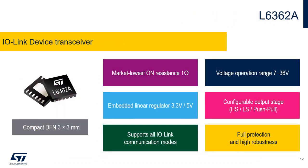Besides the newest part, we have also another interesting transceiver for IO-Link applications — the single channel IO-Link device transceiver L6362A. It has a power stage with the lowest on resistance on the market, in the range of 1 ohm. It can be configured to high side, low side or push-pull modes by hard wiring in the application. It has an embedded linear voltage regulator with output voltages at 3.3 or 5 volts. It supports all IO-Link communication modes and one of the key strengths of this chip is integrated full protection and really extreme robustness.